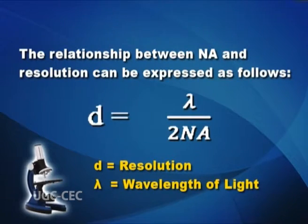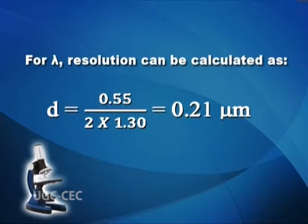The limit of resolution is the smallest distance by which two objects can be separated and still be distinguished as two separate objects. The relationship between numerical aperture and resolution is expressed as: limit of resolution d = lambda divided by 2NA, where d is resolution and lambda is wavelength of light. Using values of 1.3 for numerical aperture and 0.55 micrometer (wavelength of green light), resolution d = 0.55 ÷ (2 × 1.30) = 0.21 micrometer. Thus the smallest details visible by a typical light microscope are approximately 0.2 micrometer.